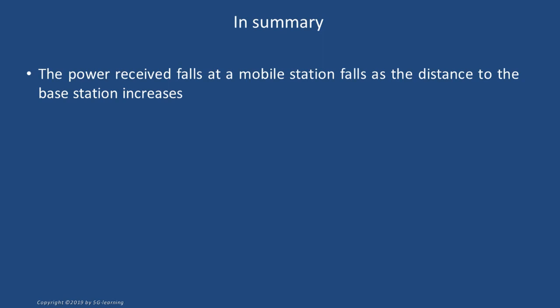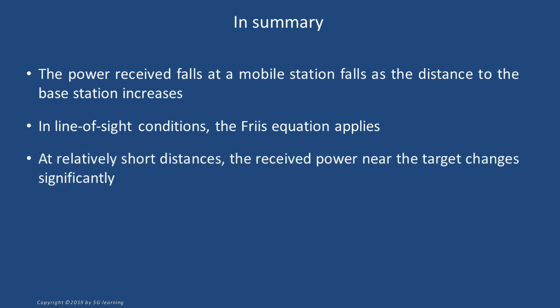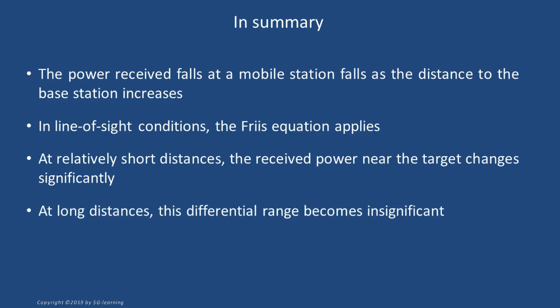In conclusion, the power received at the mobile station falls steadily as its distance to the base increases. In line-of-sight conditions, the Friis equation predicts a power loss proportional to the square of the distance. At relatively short distances, the received power near the target changes significantly, while at long distances this differential range becomes insignificant.